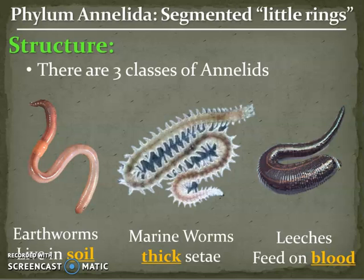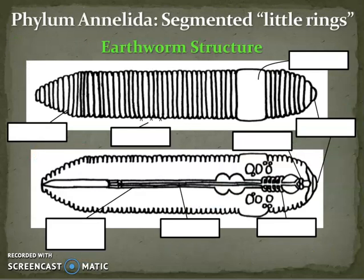In your packet, let's label our earthworm. First, we have that Band-Aid structure called the clitellum that releases eggs for reproduction. We have at the front the prostomium for covering the mouth. We have the setae, and we have the septum. The septum is what divides each segment.